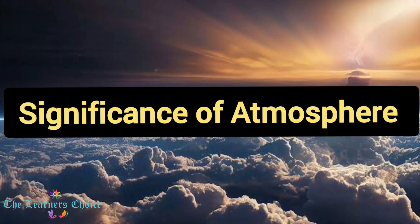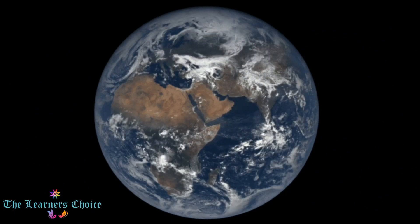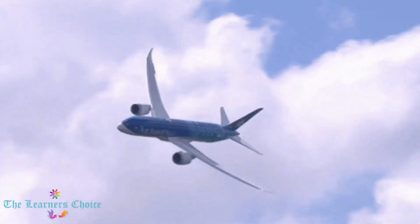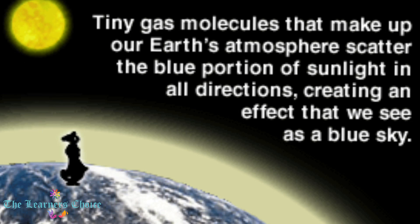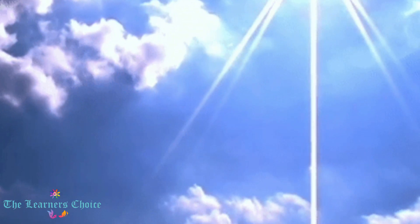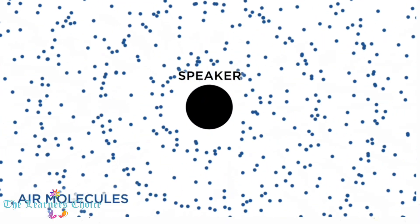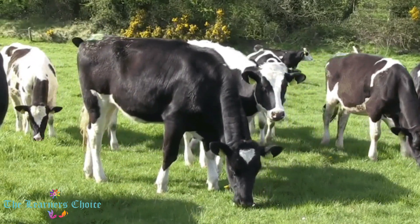Have you ever wondered what would happen if the Earth lost its atmosphere? In the absence of atmosphere, birds and planes would fall from the sky — although we can't see air, it has a mass that supports flying objects. The sky would turn black, as the sky gets its blue color due to the atmosphere; gases and particles scatter sunlight in all directions, and blue light is scattered more than any other color. There would be no sensation of sound without atmosphere, as sound requires a medium to travel. All organisms that breathe air to survive would die in the absence of atmosphere.